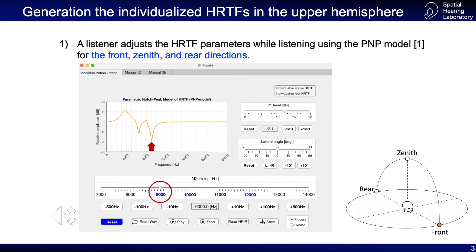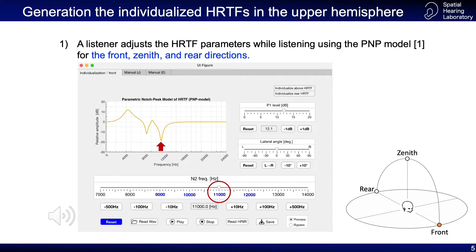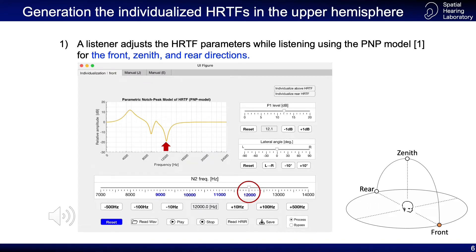Let's listen to the noise for the N2 frequency of 9kHz. From the front direction, can you hear the sound? Next is a sound with an N2 frequency of 10kHz. This is a sound with an N2 frequency of 11kHz. Did you hear that the direction of the sound changes depending on the N2 frequency? In this way, a listener adjusts the HRTFs in three directions: front, zenith, and rear.